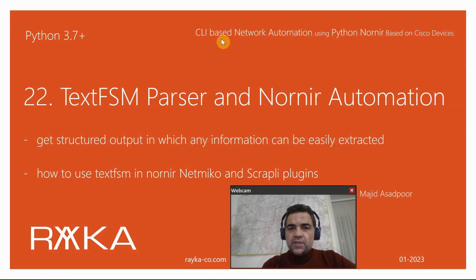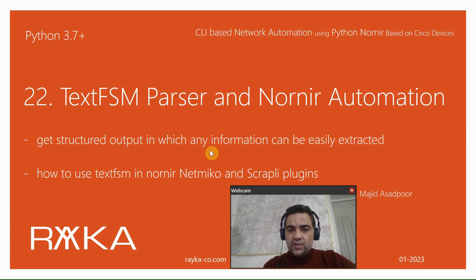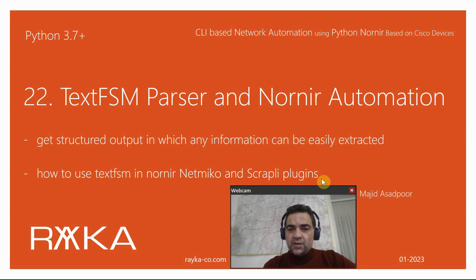Welcome to another video on CLI-based network automation using Python Nornir based on Cisco devices. In this section, we will talk about Google TextFSM parser, which helps us get a structured output when we send monitoring commands to network devices, from which any information can be easily extracted. We will also learn how to use and implement TextFSM in Nornir, Netmiko, and Scrapli plugins in automation scripts.